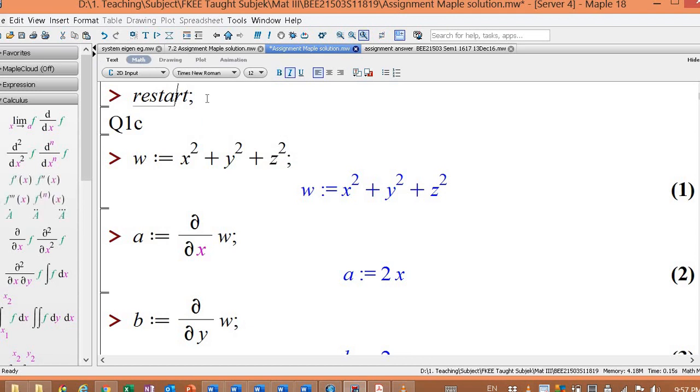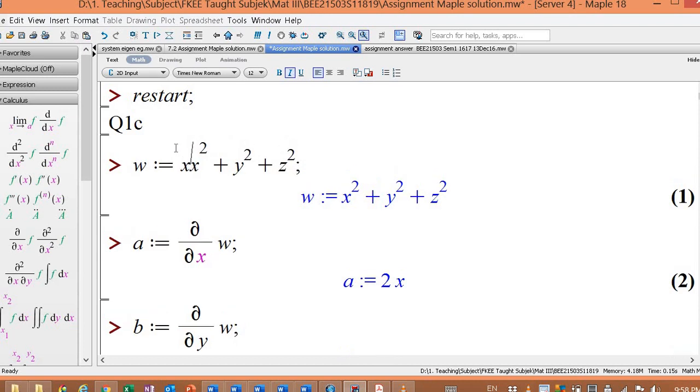Restart here is actually to clear the previous memory. This is for the text label and I define w. To define an equation in Maple, I should have colon equal. So x squared, how do I type the x squared here? And then shift 6, then it will go up. So x squared.